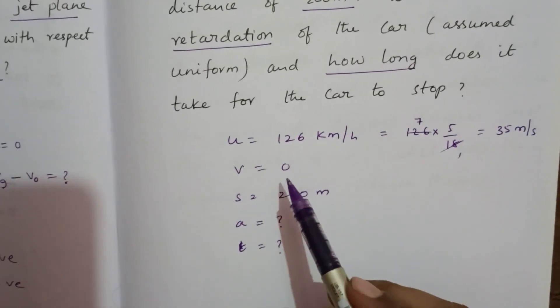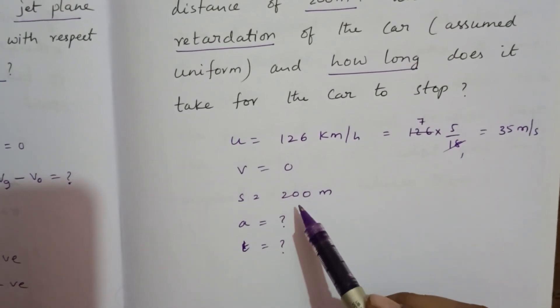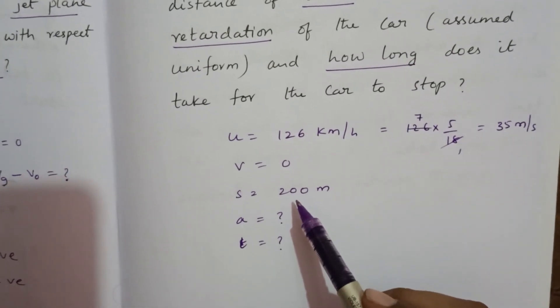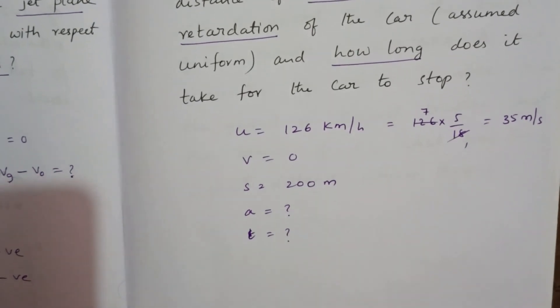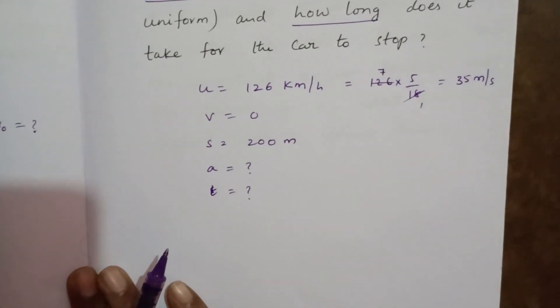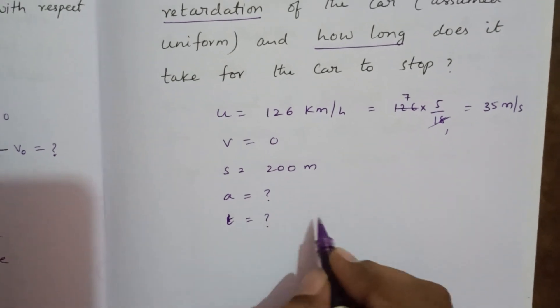So initial velocity we have, final velocity, distance covered. So to find retardation, we can use the third equation.